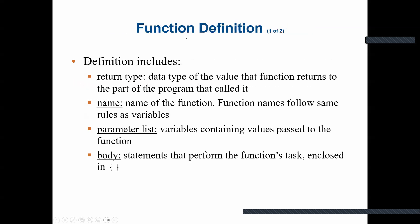The function definition includes the return type, which is the data type of the value the function returns to the calling part of the program. Then the name of the function, which follows the same naming rules as variables. The parameter list contains the variables holding values passed to the function — the data the function uses to perform its task. Finally, the body of the function contains the statements to perform the function's task.